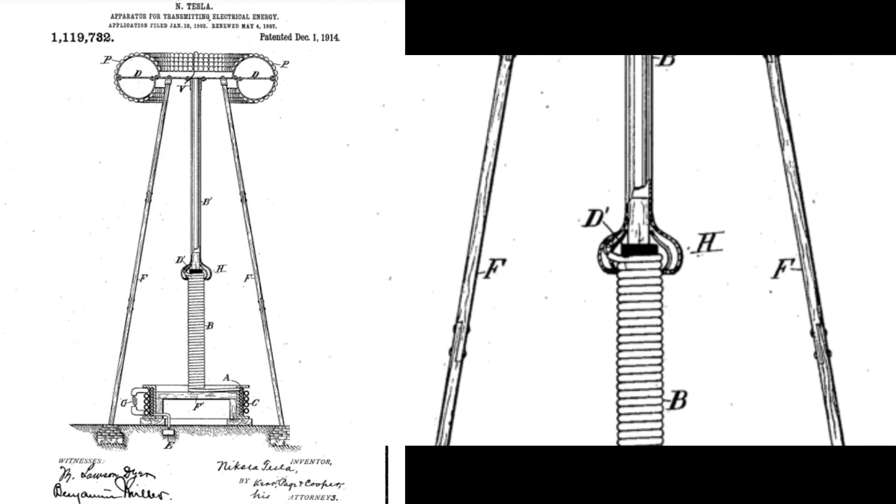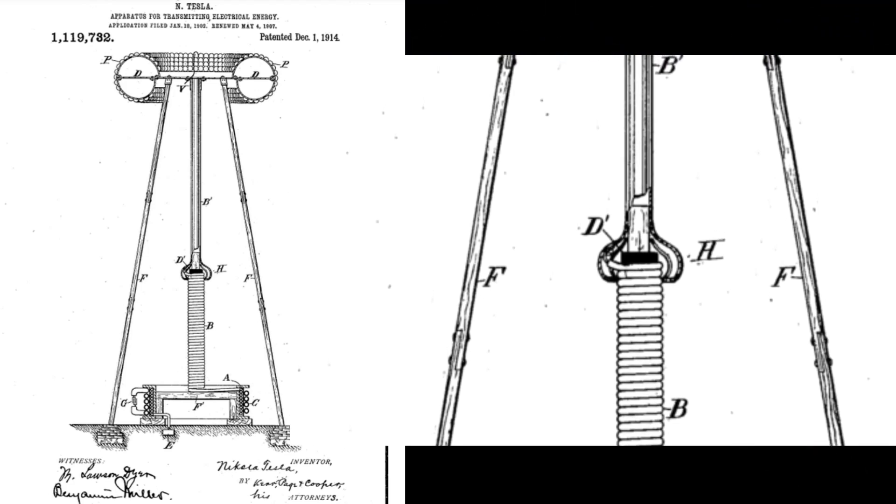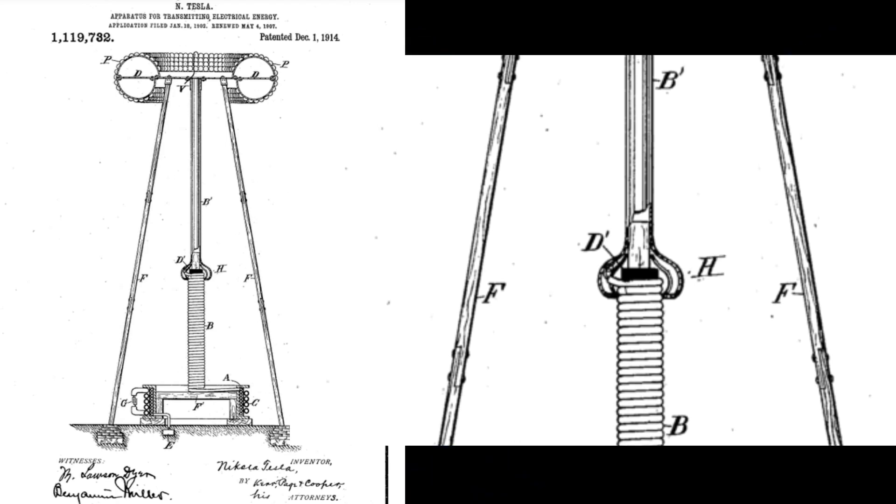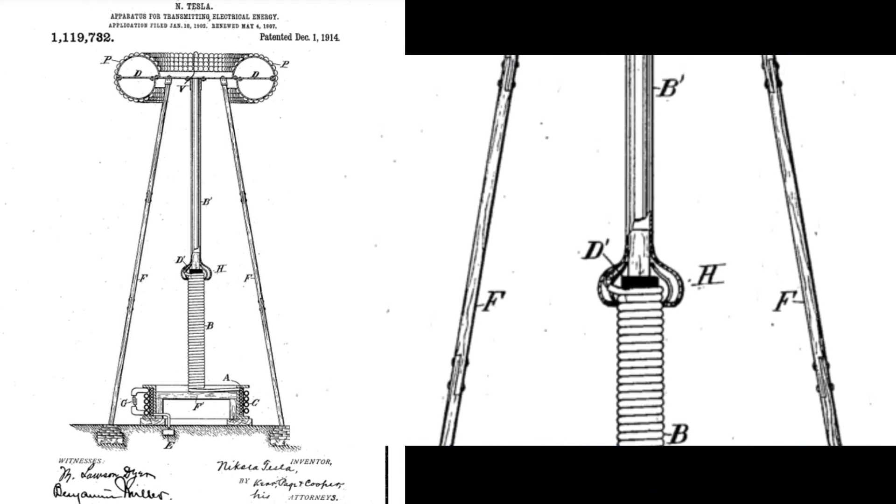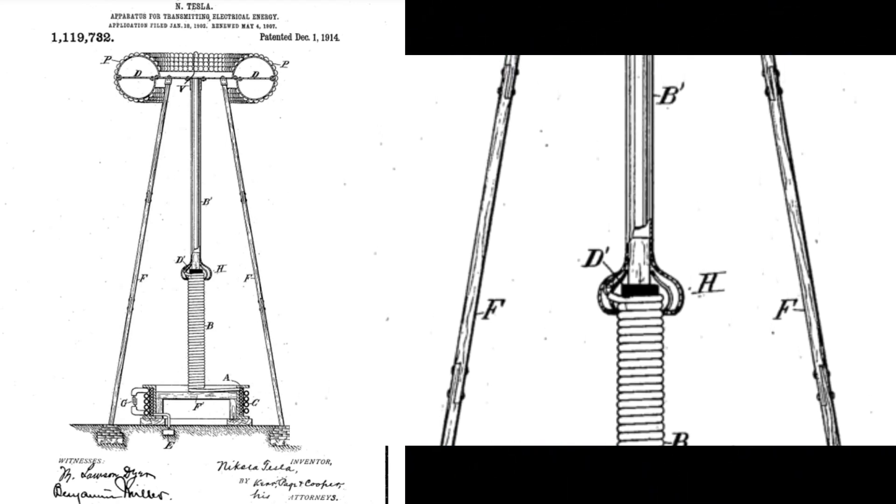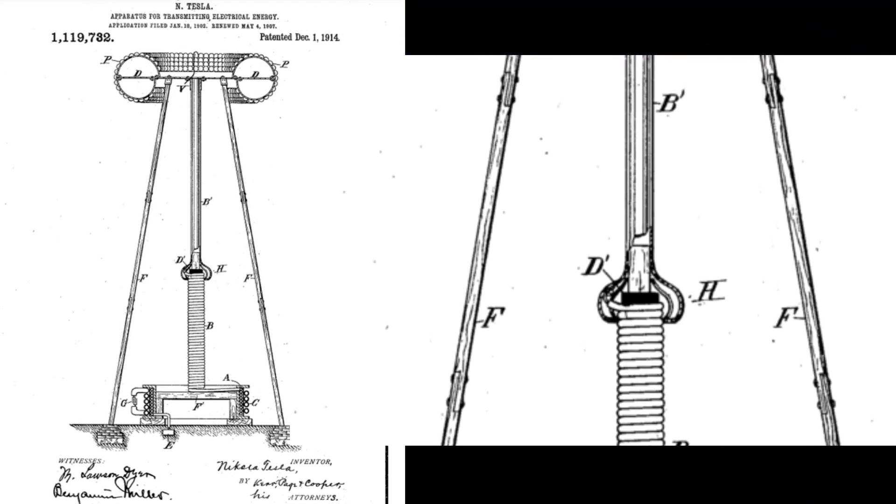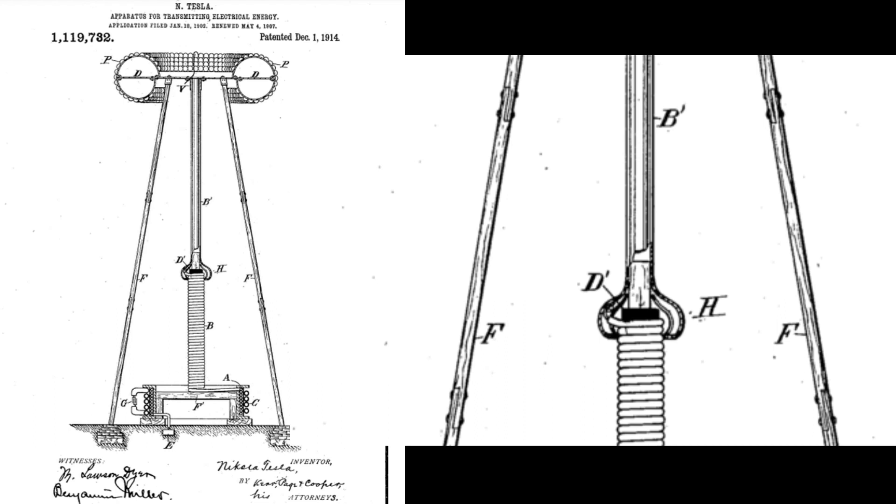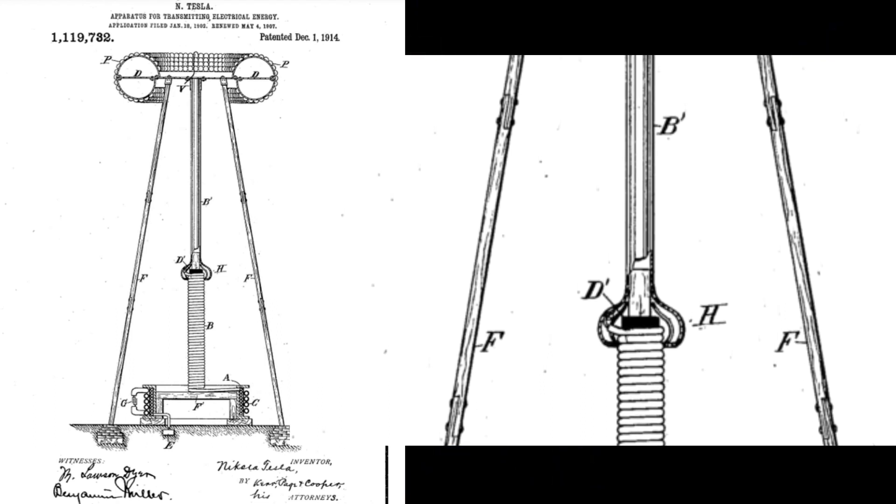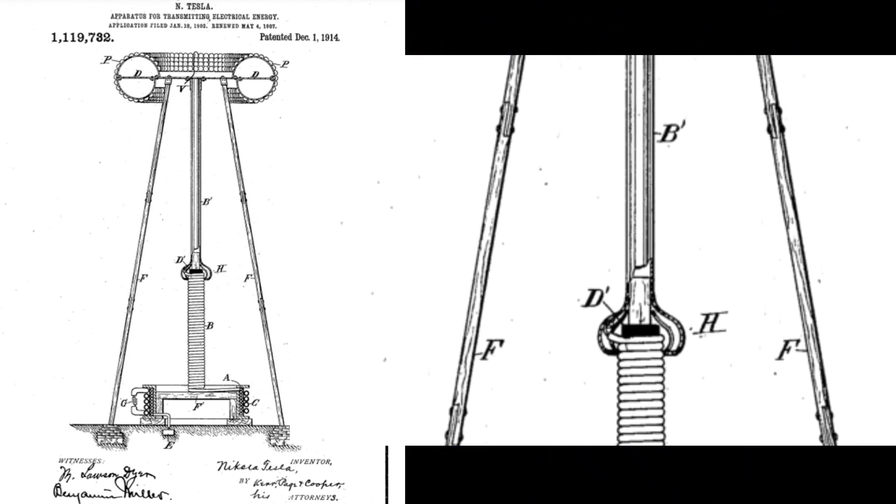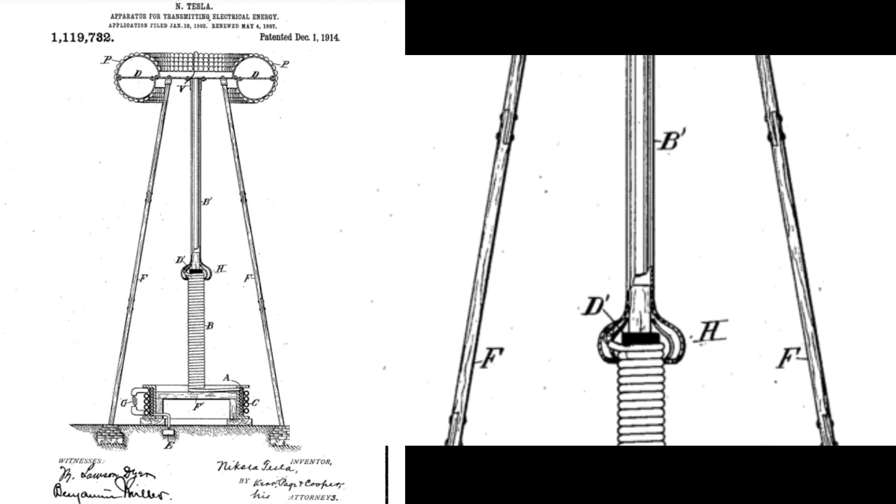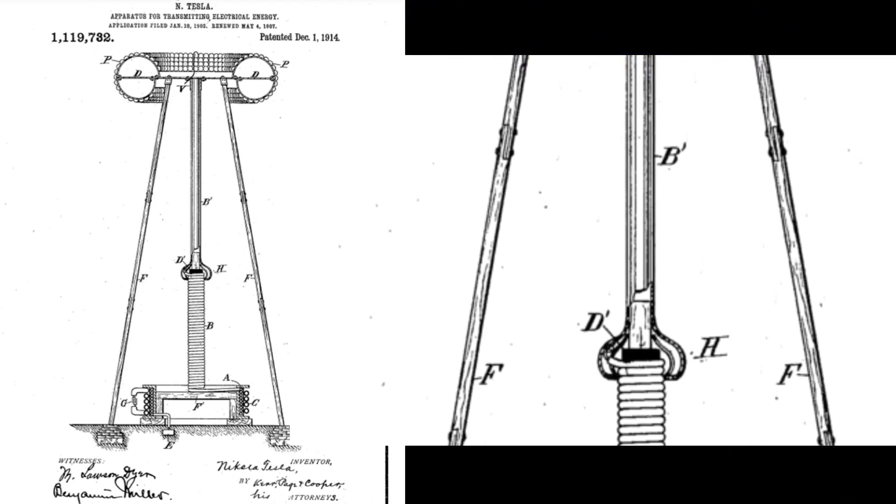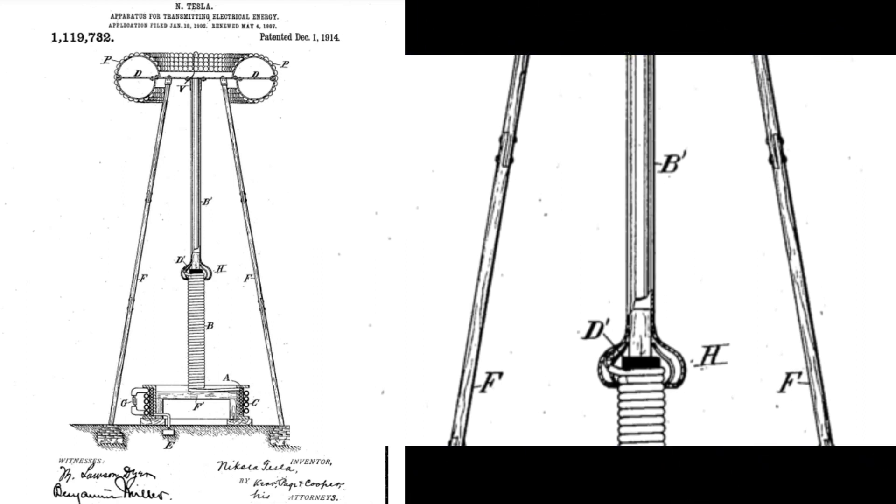The intensity of the effect of a transmitting circuit with a free or elevated terminal is proportionate to the quantity of electricity displaced, which is determined by the product of the capacity of the circuit, the pressure, and the frequency of the currents employed. To produce an electrical movement of the required magnitude, it is desirable to charge the terminal as highly as possible, for while a great quantity of electricity may also be displaced by a large capacity charged to low pressure, there are disadvantages met with in many cases when the former is made too large.